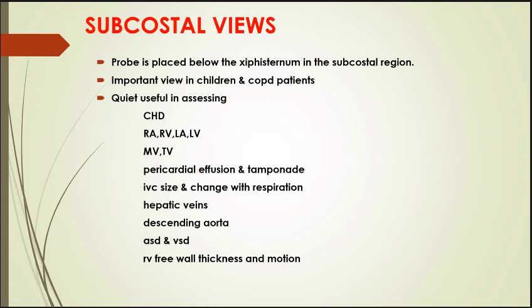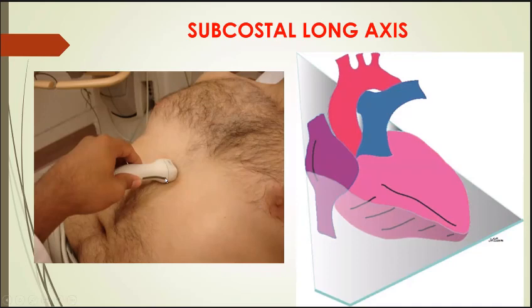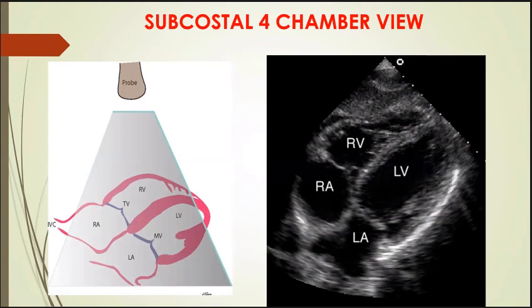The difficulty with this view is that if the patient is very obese, we cannot see the subcostal window clearly. For the four-chamber subcostal view, the probe is placed in the subcostal window with the pointer facing towards the left side of the patient, and the patient lies in supine position. We get a four-chamber view showing LA, LV, RA, RV — similar to the apical view but from a different direction — along with the mitral valve and tricuspid valve.